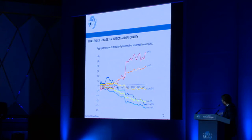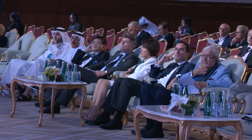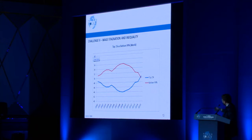Aggregate income concentration is in the top 5% and top 20% of American households in this period from the 1970s to today. At the global level, wealth concentration in the top 1% versus the bottom 99%: in 2015 was the first time that the top 1% had more aggregate wealth than the remainder of the planet.